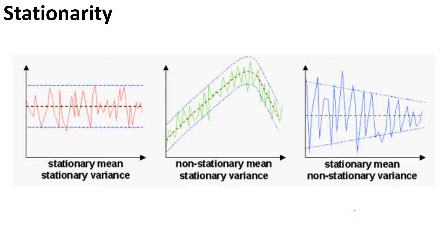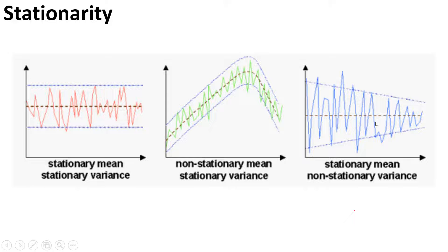Putting all three images together: the first is stationary because both mean and variance travel alongside the x-axis and remain constant over time. In the second, the mean is non-constant but variance is constant — so it is not stationary. The third has constant mean but non-constant variance — also not stationary.